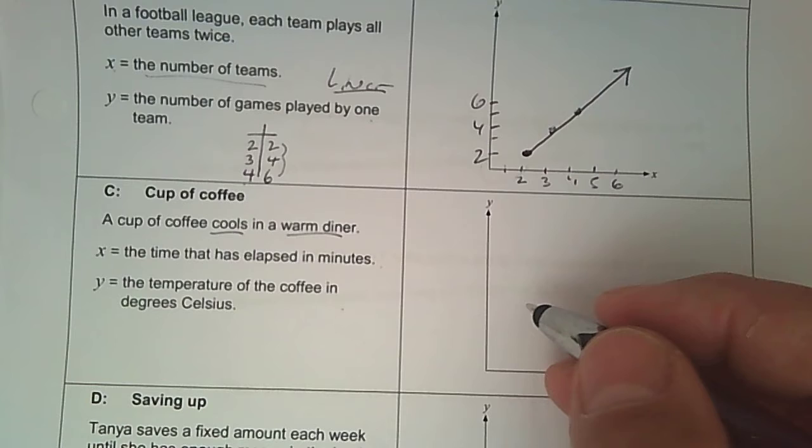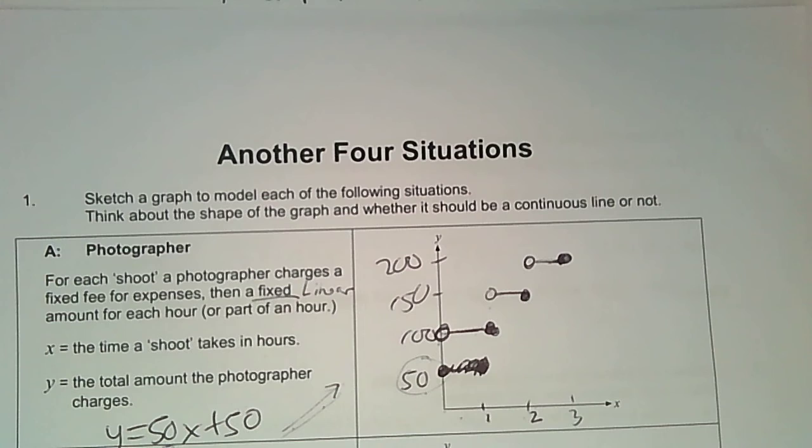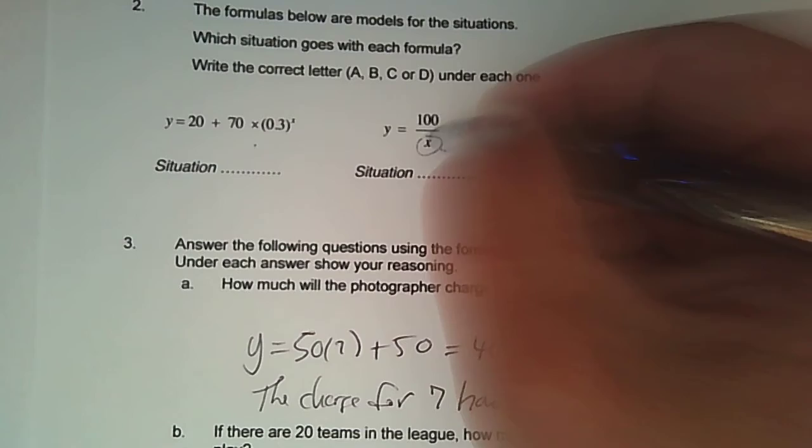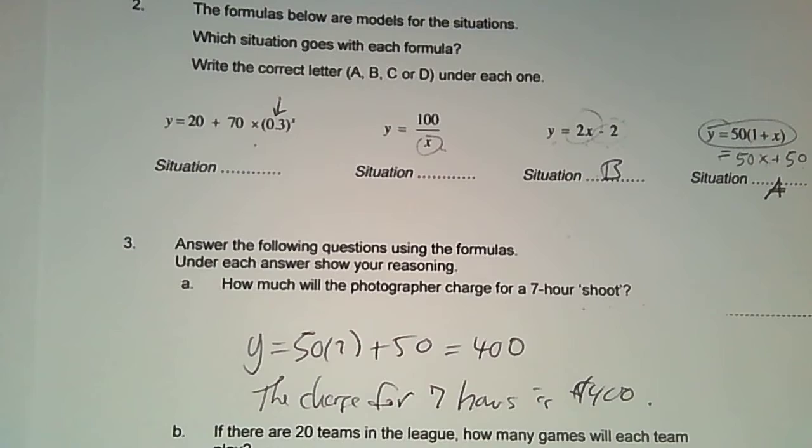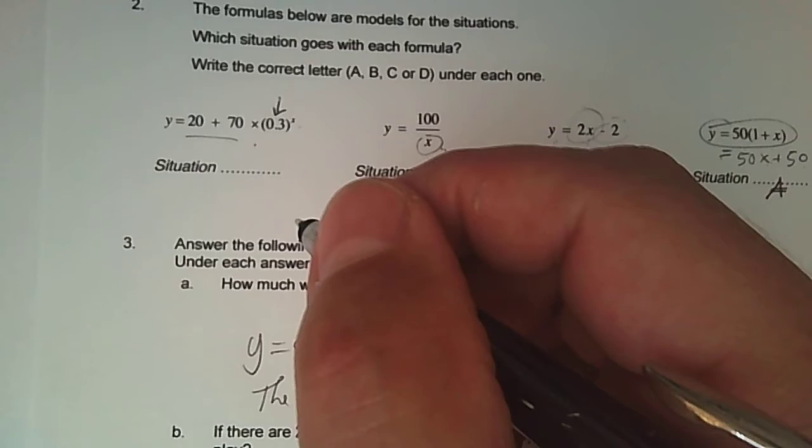So which one of these is decreasing over time? So the tempting one to pick would be 100 divided by X. But the problem is that when you plug in zero, the initial temperature, you have something that's undefined. So it's not that one. So notice this exponential has a base that's less than one. So 0.3 means it's decreasing. If I plug in zero for X, that means the temperature is at 90 Celsius. That makes sense to me. That's not quite boiling, a little bit less, and then it cools from there. So decreasing starting at 90 makes sense.